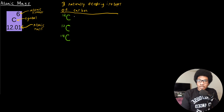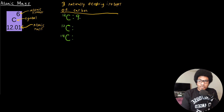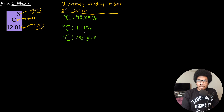We can get the natural abundance for each one of these isotopes from known data. Carbon-12 is the most abundant isotope of carbon — the one you will see most often in nature — occurring at about 98.89%. Carbon-13 accounts for about 1.11% of all carbon, and the amount of carbon-14 is actually negligible, a little bit less than the 0.01% accounted for in carbon-13.